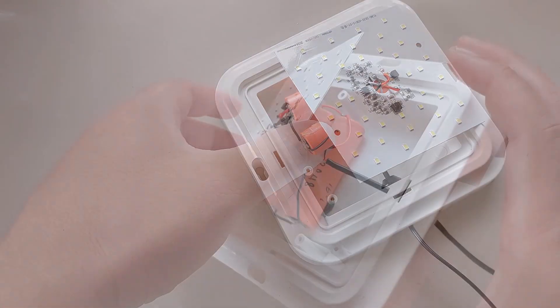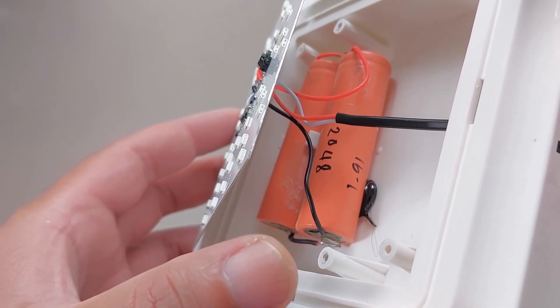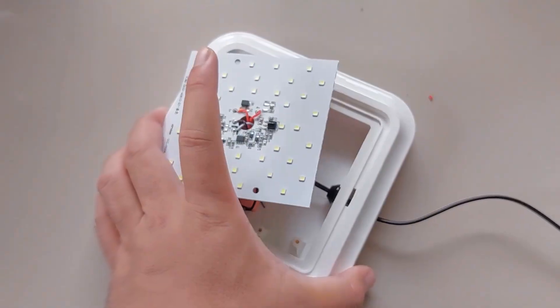Remember to place the solar panel in sunlight to activate the batteries. Otherwise the light won't turn on even if you use the remote.